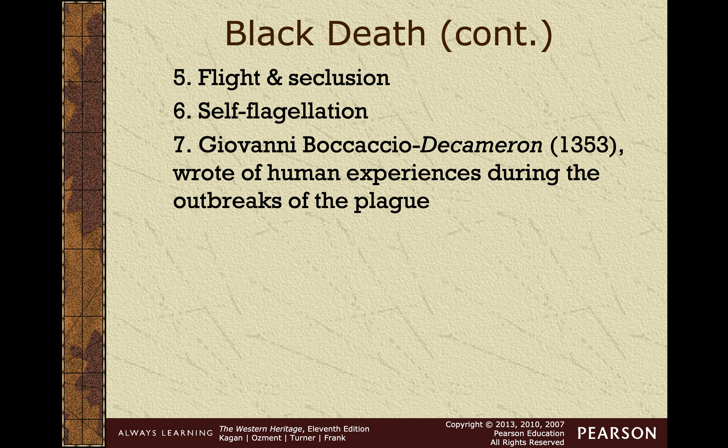One of the ways we know about how people were reacting and the human experience during this time is from Boccaccio and the Decameron. This is a primary source from that time describing the Black Death — he wrote about what was going on with people and what they were experiencing. That's how we know. It's a primary source; he was writing about what he was seeing from that time period.